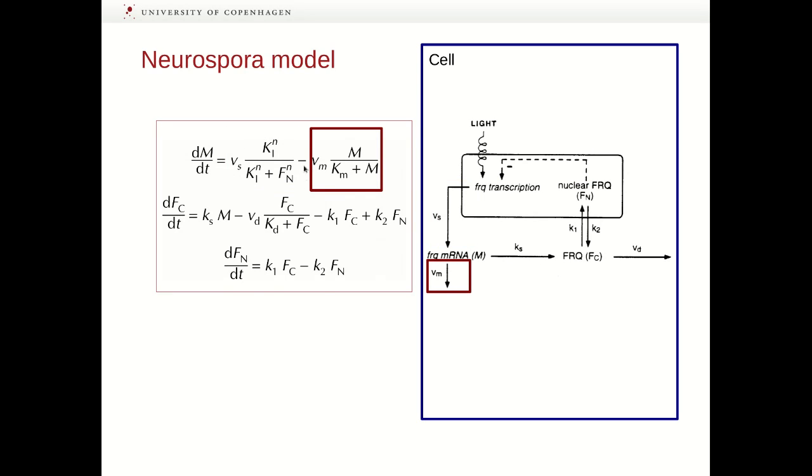Whereas the first term here describes the production of mRNA, the second term describes the degradation of mRNA, because you have the minus in front of this equation. And as you can see, this is a Michaelis-Menten equation that describes saturation of degradation of mRNA. Next, we have a linear production of the FC protein that just depends on the amount of mRNA present in the cytosol. Degradation of the FN protein is determined by this Michaelis-Menten equation.